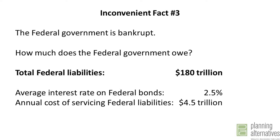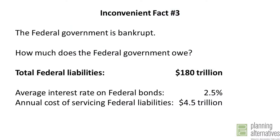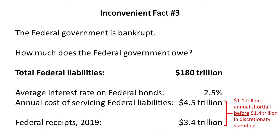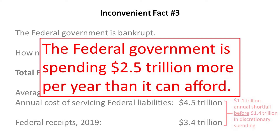The federal government currently borrows at about 2.5% per year — remember, that's given that interest rates are at a historically low level. Even at that remarkably low interest rate, the cost of servicing a $180 trillion debt is $4.5 trillion per year. To simply cover the interest payments on what the federal government owes, it would have to set aside $4.5 trillion per year. But federal receipts as of 2019 were $3.4 trillion — a $1.1 trillion shortfall — and that's before the $1.4 trillion in annual discretionary spending. Put those together, and the federal government is spending $2.5 trillion more per year than it can afford.